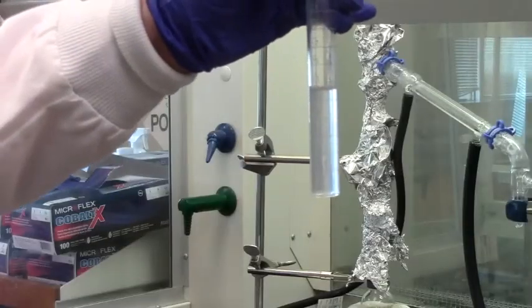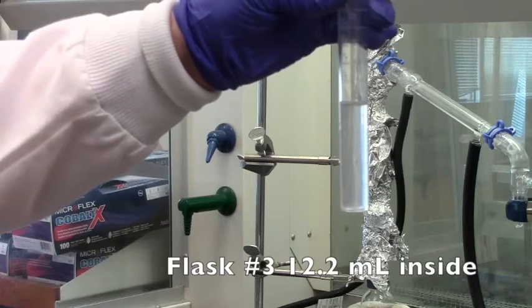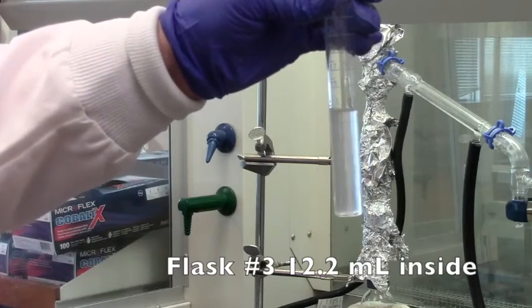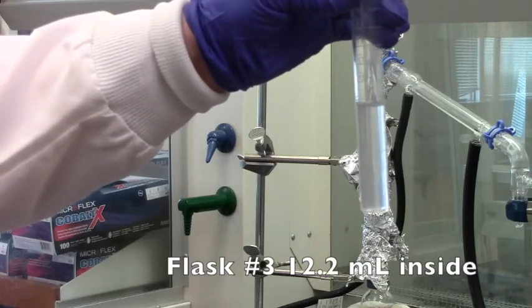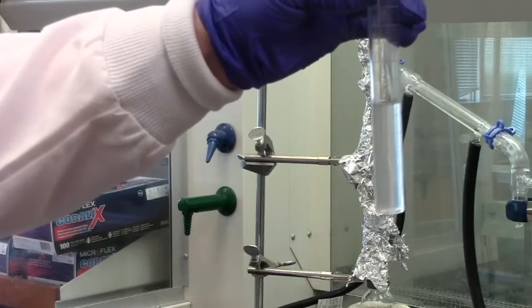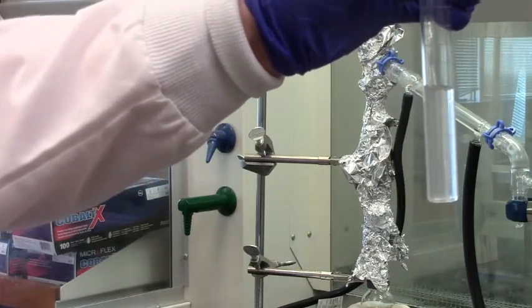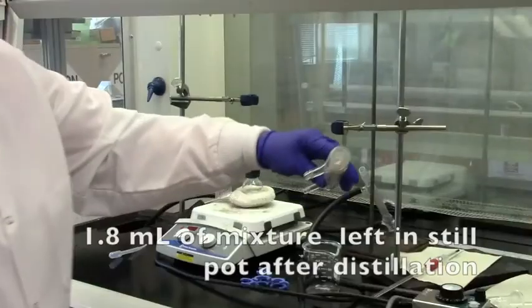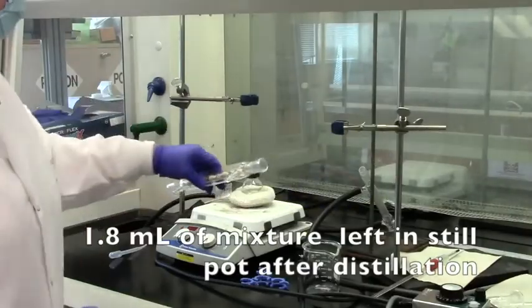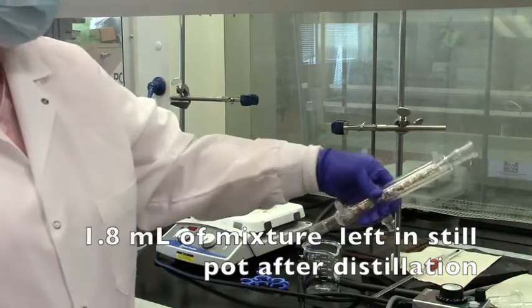Just measured the amount of material in flask number three, and we had 12.2 milliliters of fraction three, which should be mostly of the toluene. Just measured what was left in the steel pot and was 1.8 milliliters.